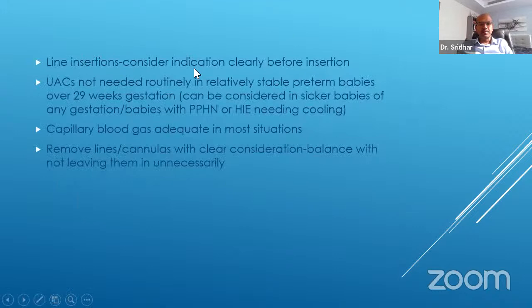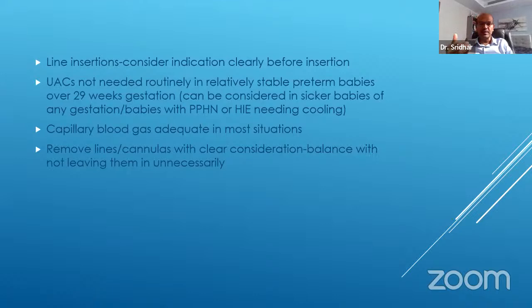For central and umbilical lines, consider the indication carefully before insertion. Umbilical arterial catheters are not routinely needed in relatively stable premature babies over 29 weeks — at 28 weeks and below you may consider both. For babies 29 weeks and above needing only a UVC, consider a PICC line, as the number of manipulations is usually fewer. Capillary blood gas is adequate in most situations if you don't have a UAC. Remove lines and cannulas with clear consideration — even a few extra hours without indication matters.